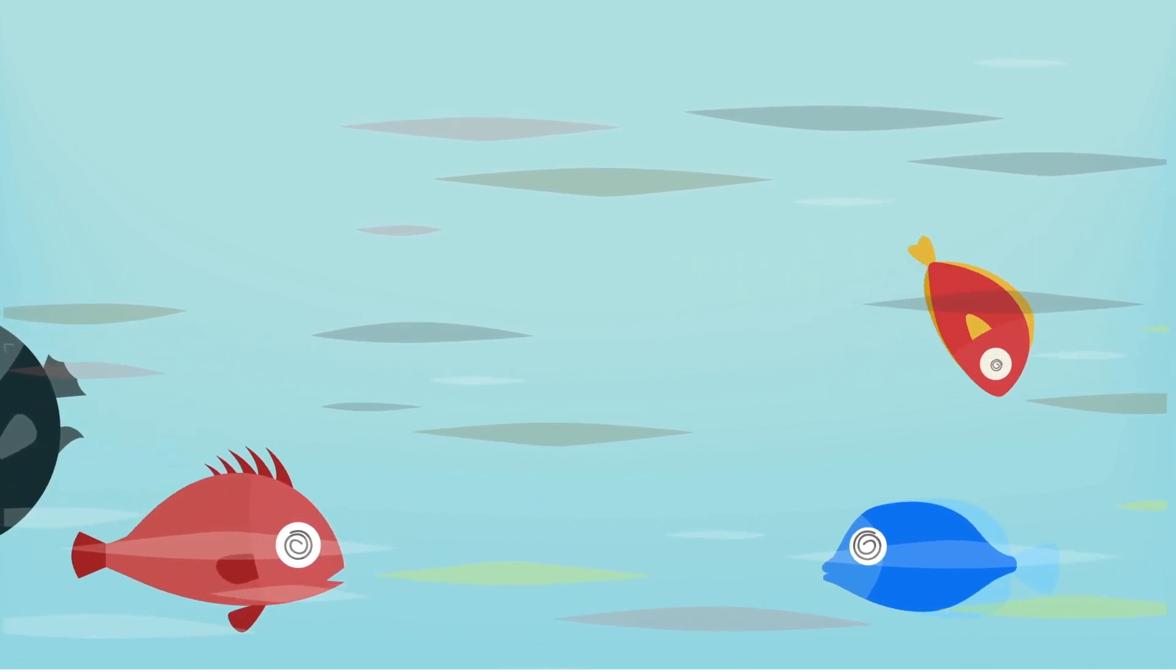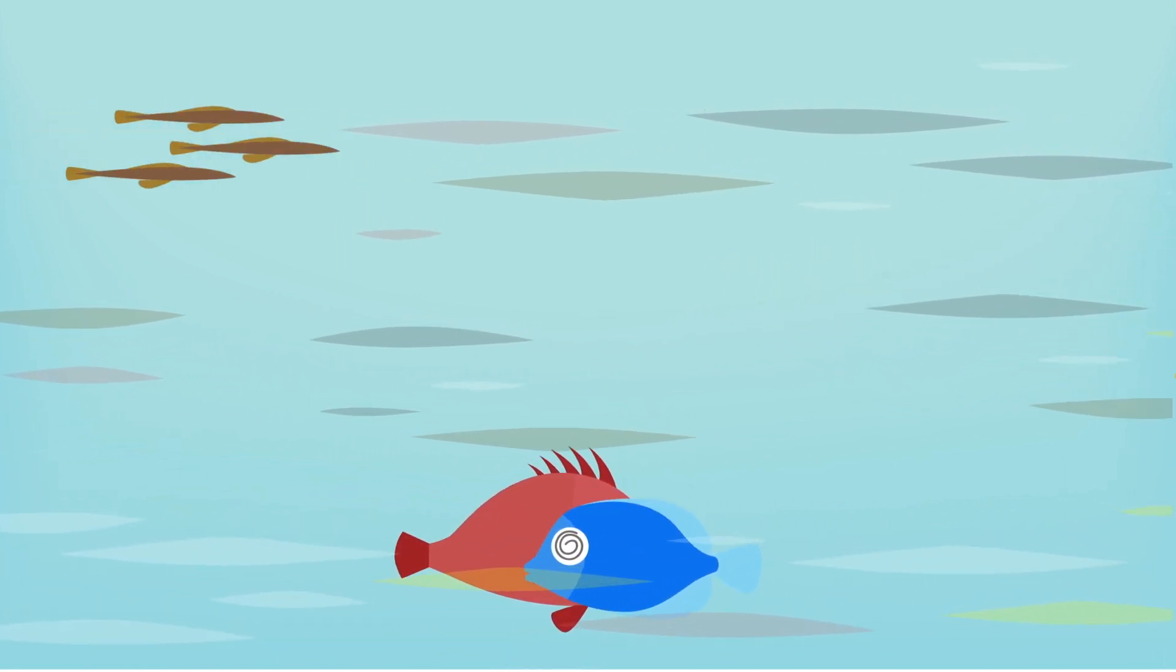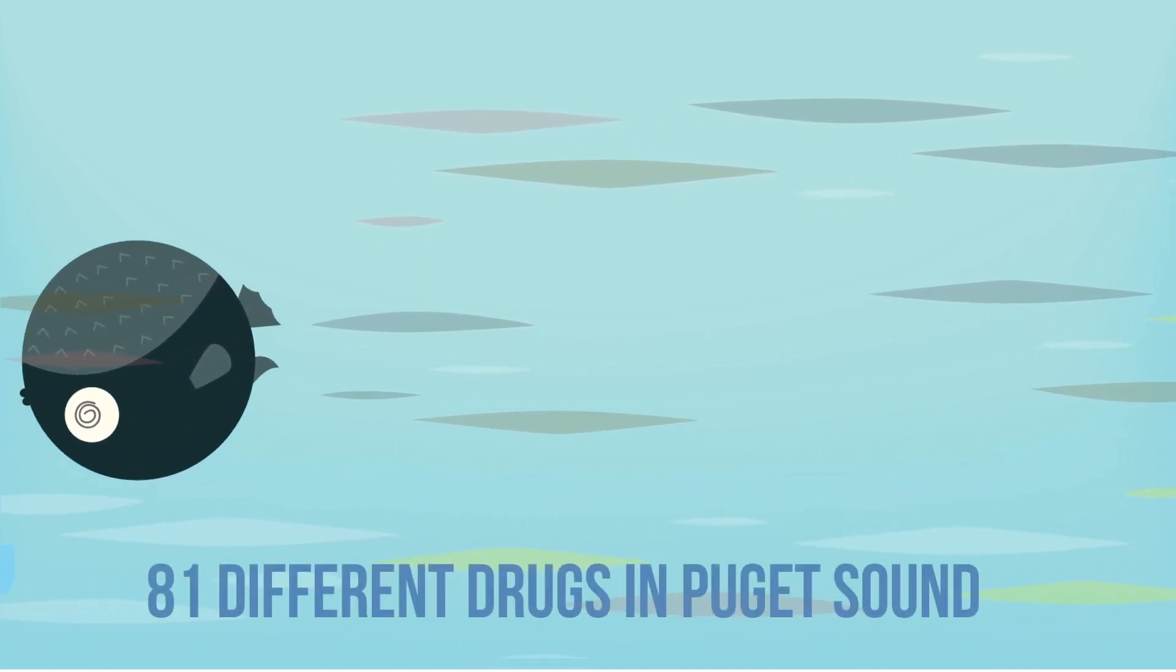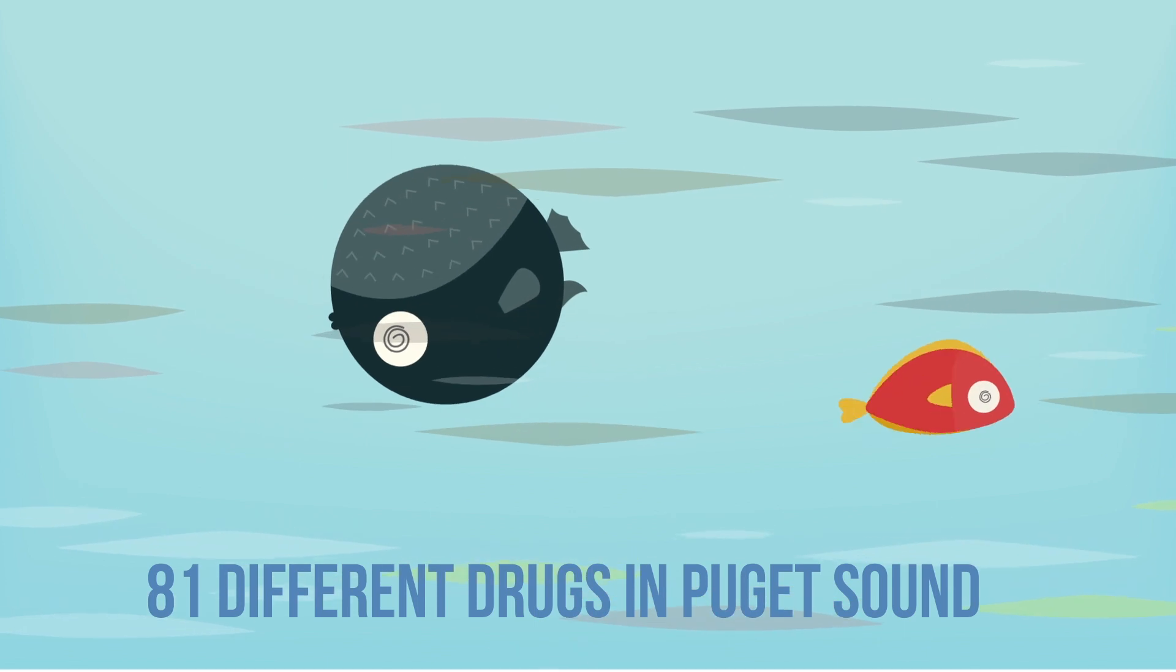Puget Sound salmon have been found with Prozac, Lipitor, and antibiotics galore. Some water samples in Washington contained a cocktail of 81 different drugs. How can this be happening?